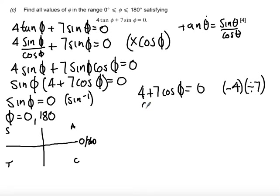If I subtract 4 and divide by 7 on both sides, we get cosφ = -4/7. Then we take the inverse cos function so that φ is going to be equal to 124.8 degrees.